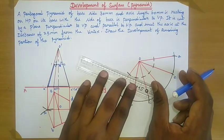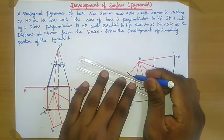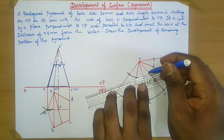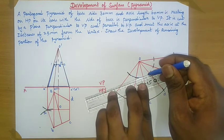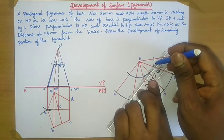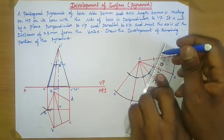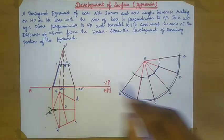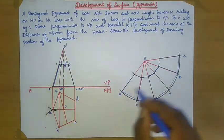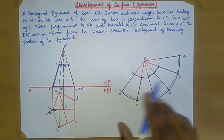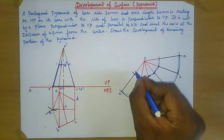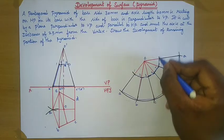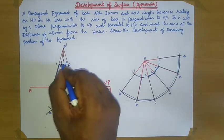Now join all the points. We have now darkened the remaining portion in order to obtain the development of the pentagonal pyramid. Darken all lines and name the points as 1, 2, 3, 4, 5, and back to 1. This is the development of the surface for the pentagonal pyramid.